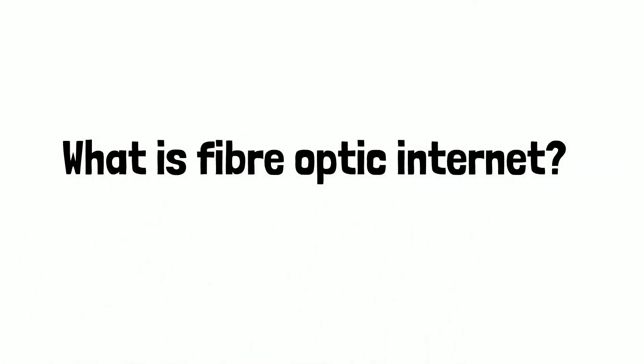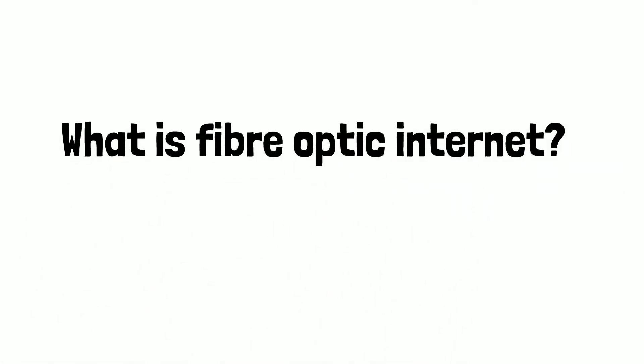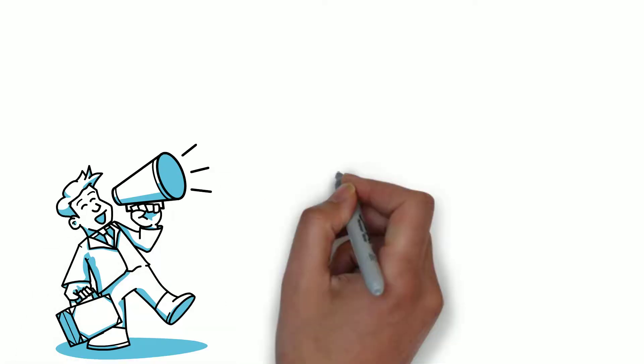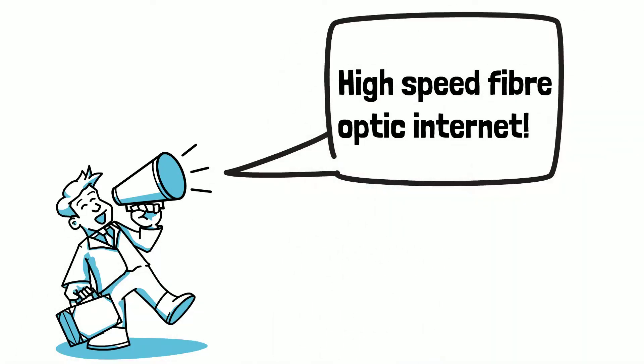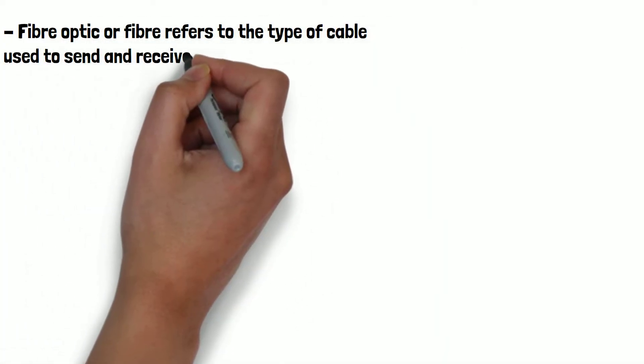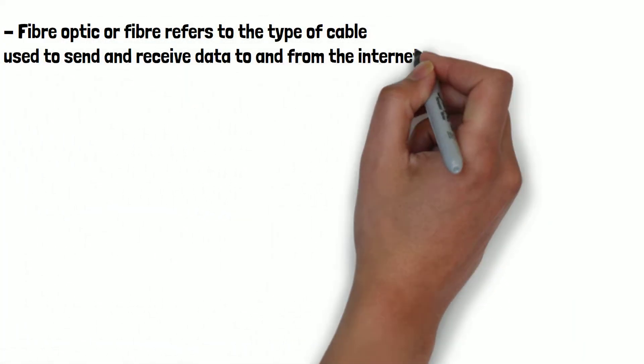What is fiber optic internet? In recent years, you've likely seen internet service providers advertise high-speed fiber optic internet, or heard people mention that fiber optic is a much better and faster form of internet connection. But what actually is fiber optic? Fiber optic, or fiber, refers to the type of cable used to send and receive data to and from the internet to your home.